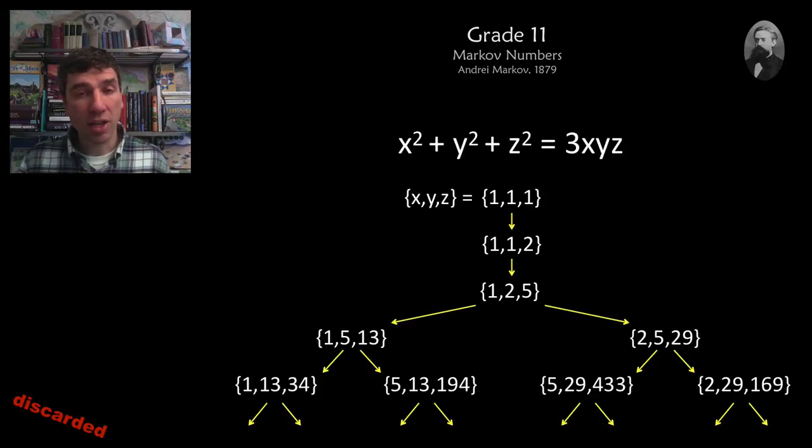The unsolved problem here is that for any of these triples, does the largest number, is it only the largest for one of these triples? So 433, is that the largest number in only one of these triples?